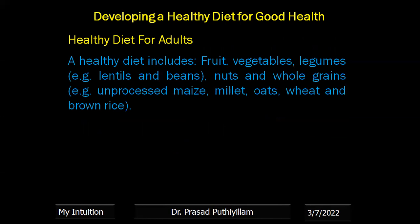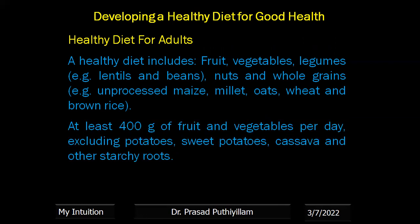For adults, a healthy diet includes fruits, vegetables, legumes like lentils and beans, nuts and whole grains — for example, unprocessed meats, millet, oat, wheat, brown rice, etc. At least 400 grams of fruit and vegetable per day, excluding potato, sweet potato, cassava and other starchy roots.